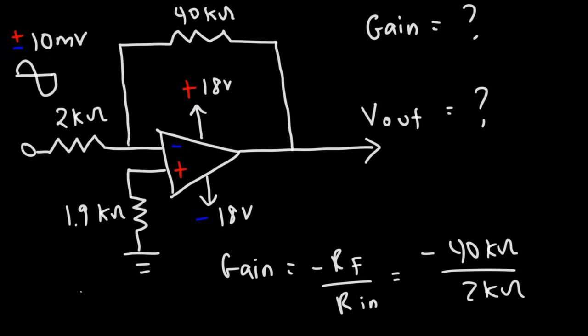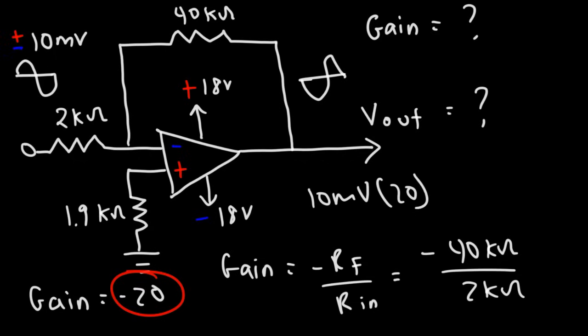So negative 40 divided by 2, the closed loop voltage gain is negative 20. Now, keep in mind, a negative sign simply tells us that the polarity has been reversed, or that the output signal is 180 degrees out of phase with the input signal. Now, what is the output voltage? If the gain is 20, it's going to be 20 times more than 10 millivolts. So it's 10 millivolts times 20. 10 times 2 is 20. So 10 times 20 is 200. So thus, the output signal will have a voltage that will vary between positive and negative 200 millivolts.